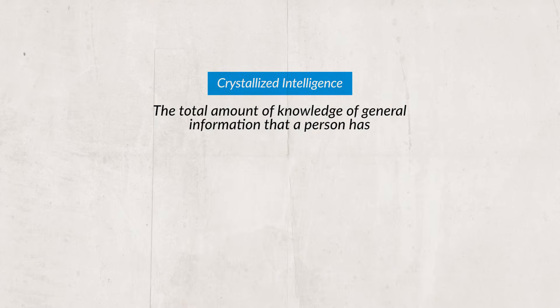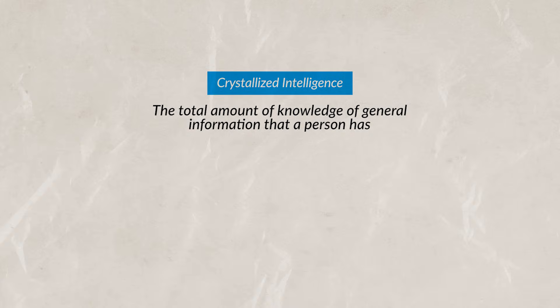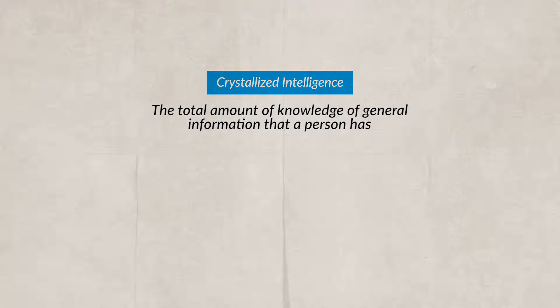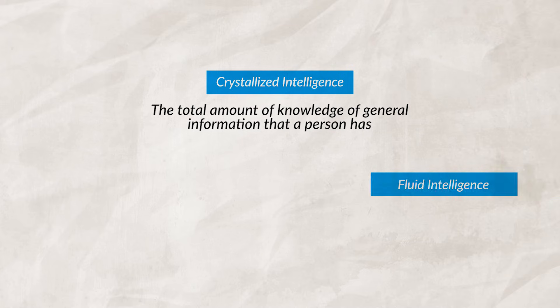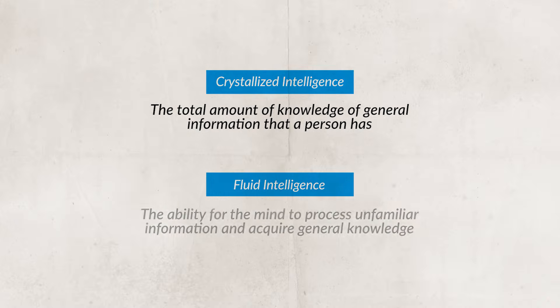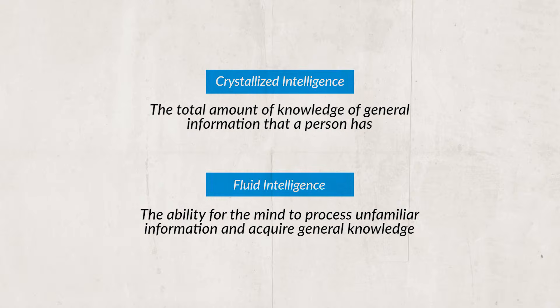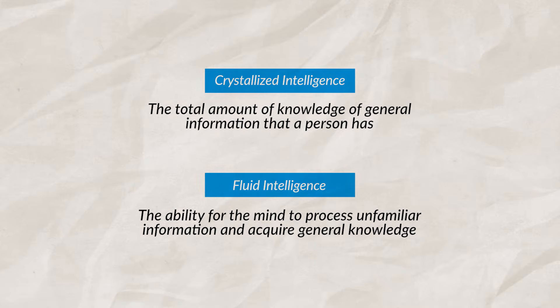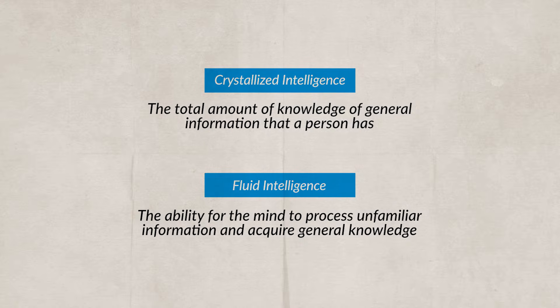Throughout our lifetime we continue to learn, grow, and expand our knowledge base, so our intelligence is theoretically always changing. Our accumulated knowledge and verbal skills, which traditionally increase as we age, are known as crystallized intelligence. Our fluid intelligence — our ability to quickly reason and break down abstract problems — traditionally decreases as we age, because over time our processing speed slows and it takes more time to complete certain mental tasks.